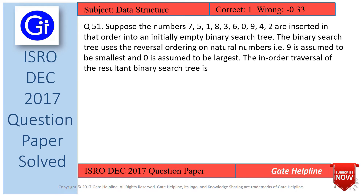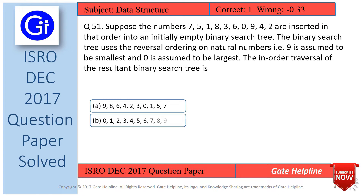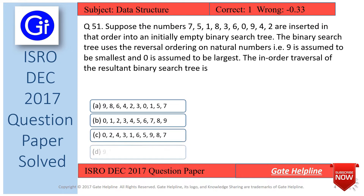Question number 51 is: suppose the numbers 7, 5, 1, 8, 3, 6, 0, 9, 4, 2 are inserted in that order into an initially empty binary search tree. The binary search tree uses the reversal ordering on natural numbers, that is 9 is assumed to be smallest and 0 is assumed to be largest. The in-order traversal of the resultant binary search tree is — options A, B, C, and D.